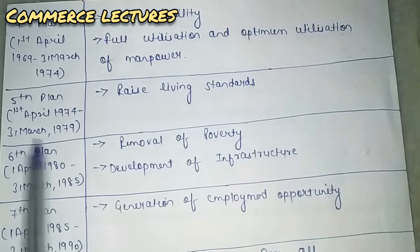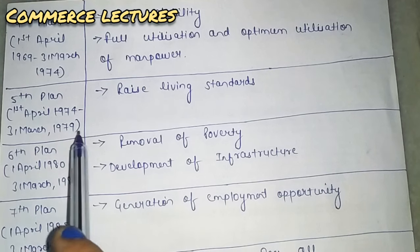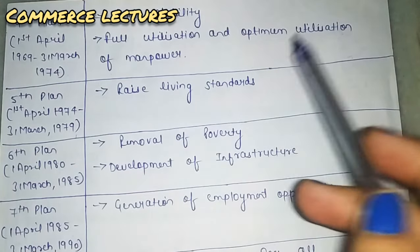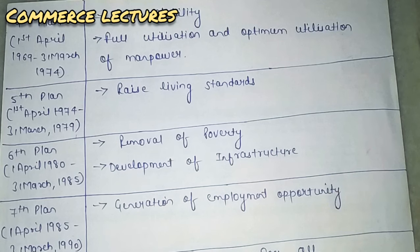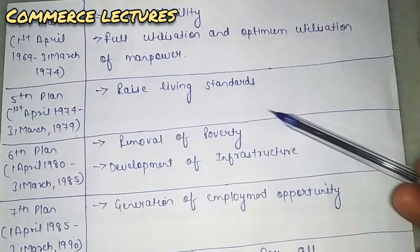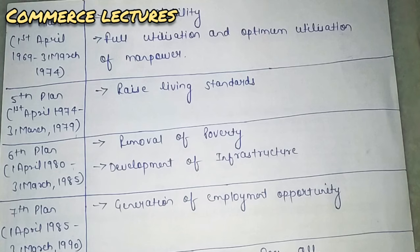The fifth plan ran from 1974 to 1979, with the main aim of raising the living standard. The sixth plan ran from 1982 to 1985, with two main motives: first, removal of poverty; and second, development of infrastructure — roads, bridges, canals, and different developments.